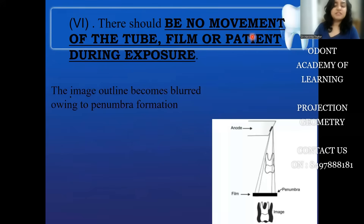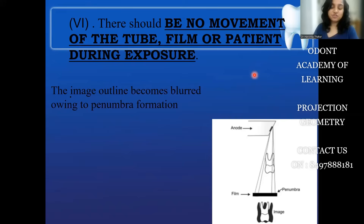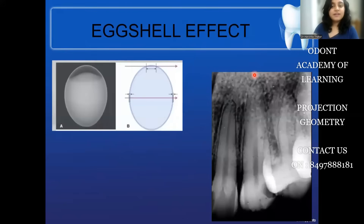The last principle states that whenever you are exposing the patient, there should be absolutely no movement of the tube, the film, or the patient, because it will obviously lead to haziness or blurriness of the image. So I hope the principles of projection geometry were clear. Now, before we end this video, there is one phenomenon we must know: the eggshell effect.